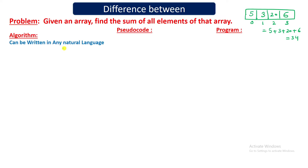But one thing you should take care of while writing the algorithm: if you write in Marathi but the programmer who will later implement your algorithm doesn't understand Marathi, he will not be able to understand your algorithm. So if he knows English, use English. We generally prefer English to write algorithms because it is a global language.